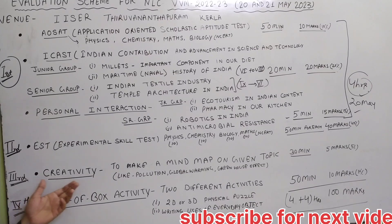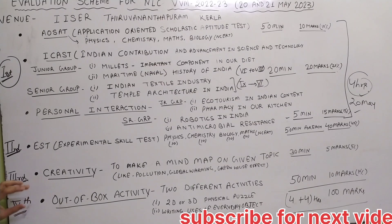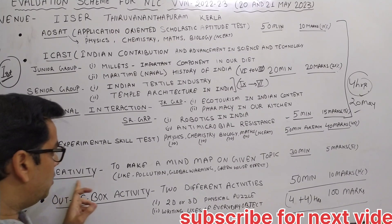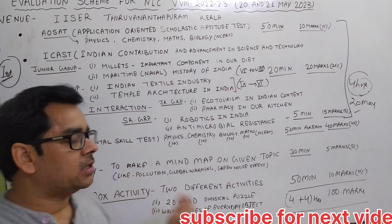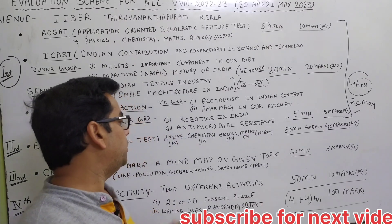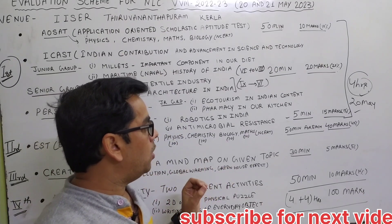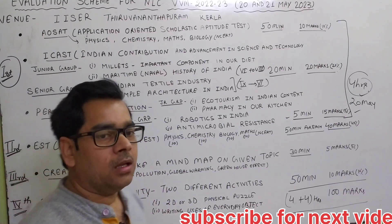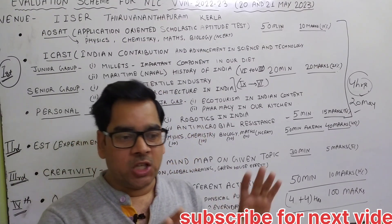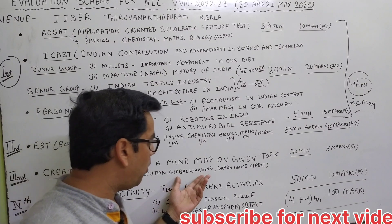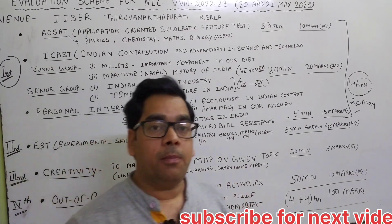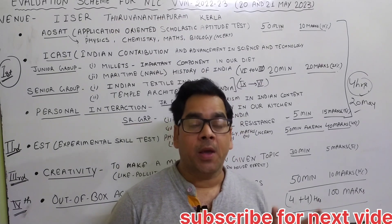The next part is creativity, which is different from the state level camp. In creativity, you have to make a mind map on a given topic. At the national level camp center, you are given a topic and have to make a mind map on a chart paper. Topics may include things like pollution, global warming, and greenhouse effect — that is, environmental problems caused by human activities.